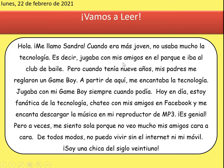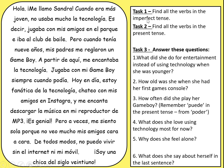Now let's look at this imperfect tense in context. Have a skim read of the text — it's also in a Word document for you so you can have a copy. Hopefully you've started to spot that there are two main tenses in here: we can see some 'era' and other endings, and then later we move to where there are no 'era' or 'ía' endings. There's talk about technology — you've got Game Boy, Facebook, MP3 — and you can start to see where it separates from imperfect to present. Find all the imperfect tense verbs and then find all the present tense ones.